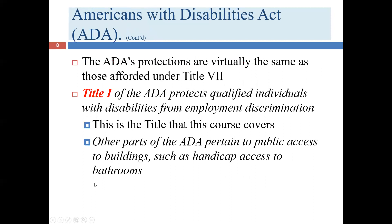There are two titles in the ADA. Title I has to do with employment. Title II has to do with public accommodation — for example, if you're in a wheelchair and can't access your seat at a stadium, that's a Title II violation. You have a right to access any places the general public has access. This is also why businesses can't refuse service animals.